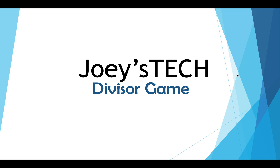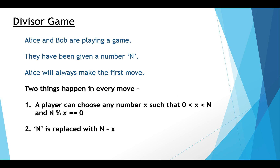Now let's see what the problem statement of the divisor game is. There are two people, Alice and Bob, who are playing a game. Alice and Bob are given a number N. Alice has been given the privilege to make the first move. In every move, two things happen.